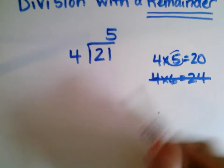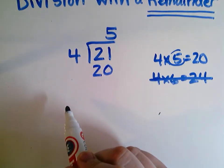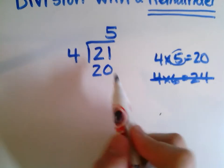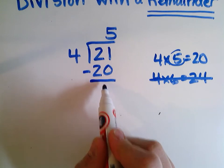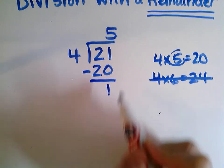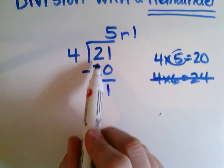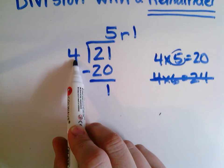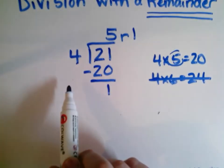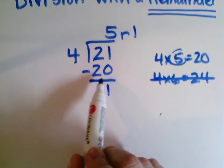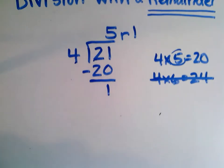So I'm going to put that 5 up on top as my quotient. 5 times 4 is 20 — I can make equal groups of 4 with 20 things. Then I subtract: 21 minus 20 gives me 1 left over. So my answer is 5 remainder 1. I'm trying to get as close to 21 as I can when multiplying by 4 — the closest I can get is 5 times 4, which is 20, with 1 left over.